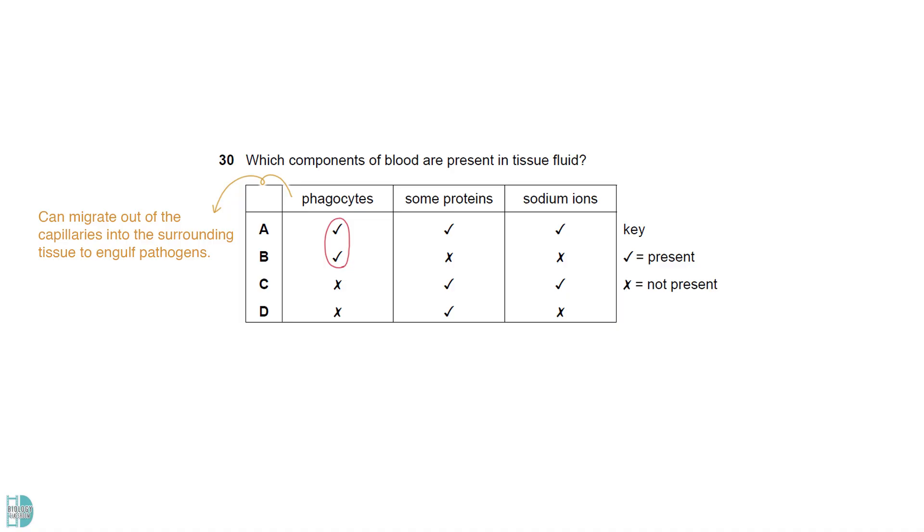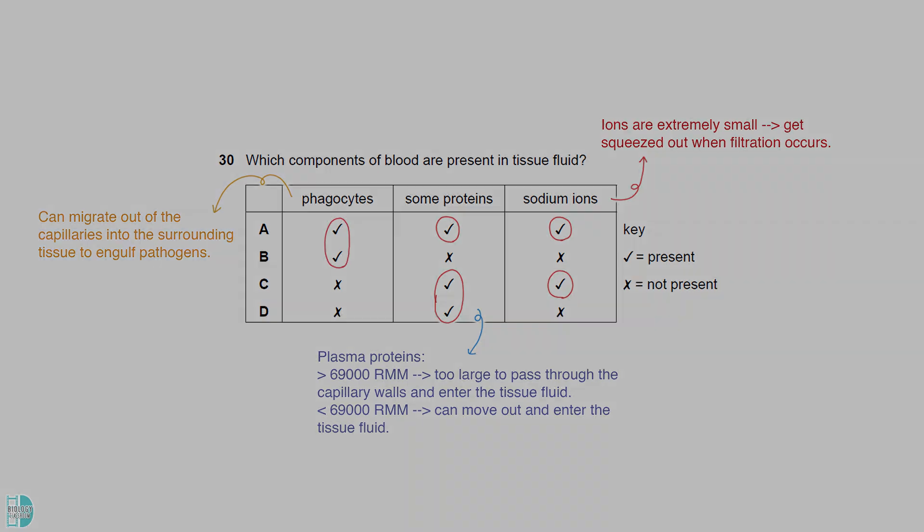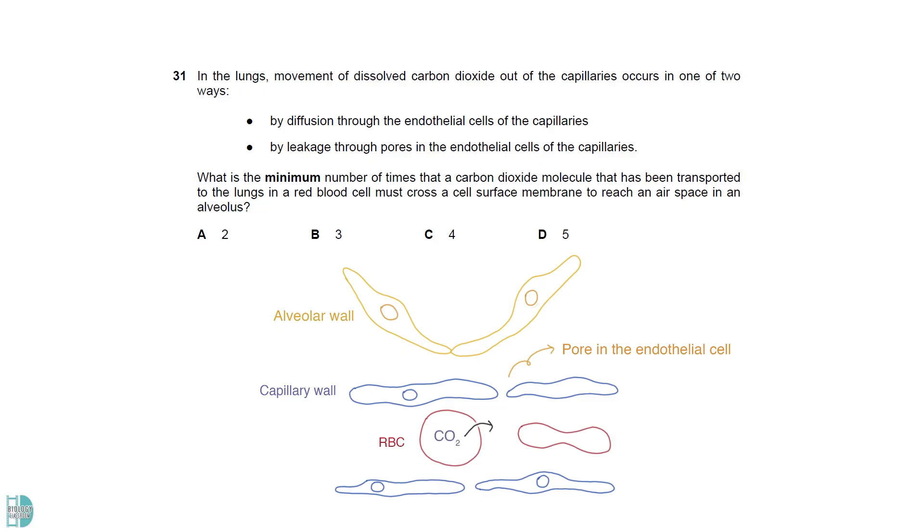Phagocytes can migrate out of the capillaries into the surrounding tissue to engulf pathogens. Many plasma proteins are too large to pass through the capillary walls and enter the tissue fluid. However, those smaller ones with a relative molecular mass of less than 69,000 can move out. Ions are extremely small. They get squeezed out when filtration occurs. If they leak through the pores in the endothelial cells of the capillaries, they will have to pass through the cell surface membrane of red blood cells, the cell surface membrane of squamous epithelial cells to enter the alveolar wall, and another one to move out. So, there are three in total.